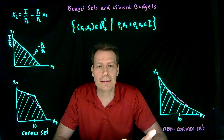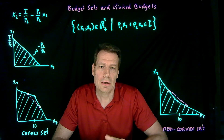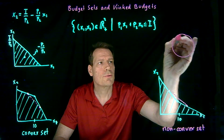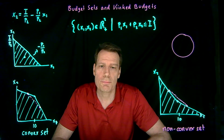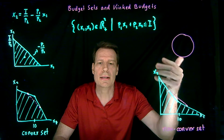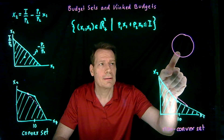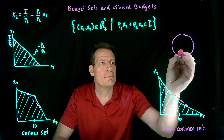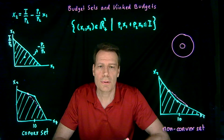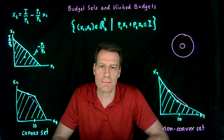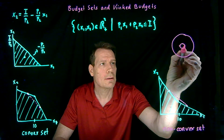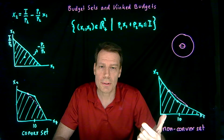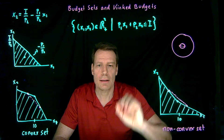If you ever forget the definition of convex and non-convex sets, think of a simple example. Suppose you have a circle that's fully filled in — that's a convex set, because any two points you pick have a connecting line that lies fully within that filled circle. But if you make it into a doughnut with a hole in the middle, it becomes a non-convex set, because you can pick two points whose connecting line lies outside the doughnut — it lies in the doughnut hole.